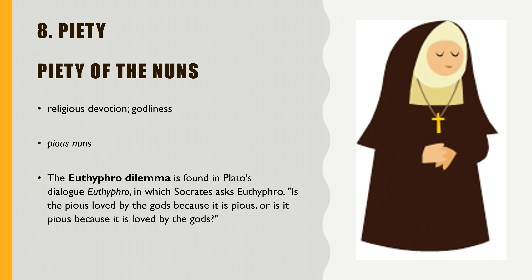There's the story of Euthyphro's dilemma, found in Plato's dialogue with Euthyphro, in which Socrates asked: 'Is the pious loved by the gods because it is pious, or is it pious because it is loved by the gods?' You have to read it slowly and think about it. For example: if this nun is pious, is she loved by the gods because she is pious? Or do we call her pious because the gods love this particular person? It's a philosophical question, but that's where we use the words piety and pious.